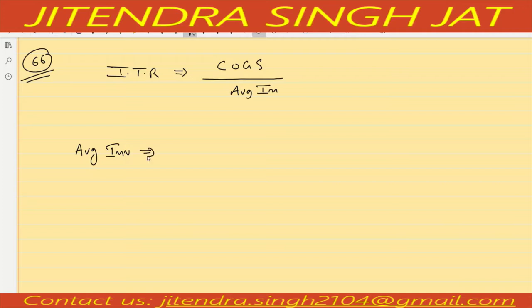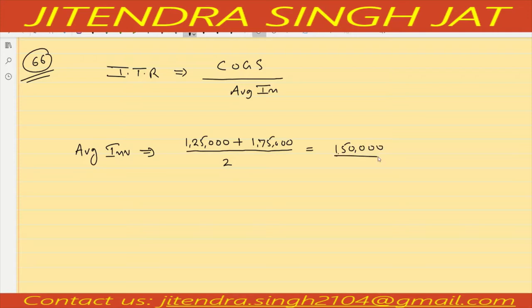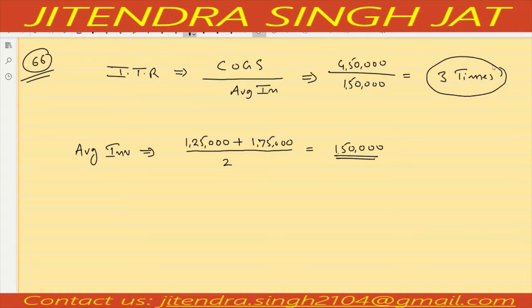Average inventory: Opening Inventory 1 lakh 25,000 plus Closing Inventory 1 lakh 75,000 divided by 2 equals 3 lakh divided by 2, which is 1 lakh 50,000. Cost of goods sold is 4 lakh 50,000. So 4 lakh 50,000 divided by 1 lakh 50,000 equals 3. Inventory turnover ratio is 3 times — all activity ratios are shown in times.